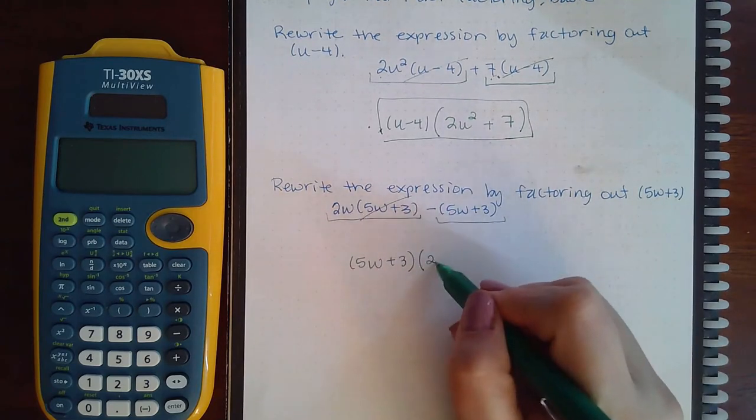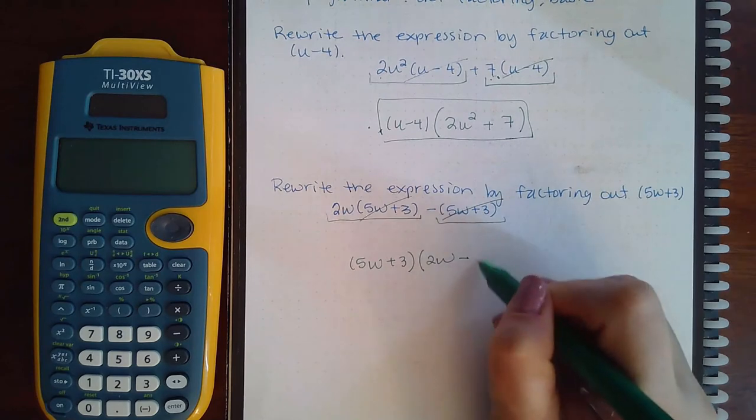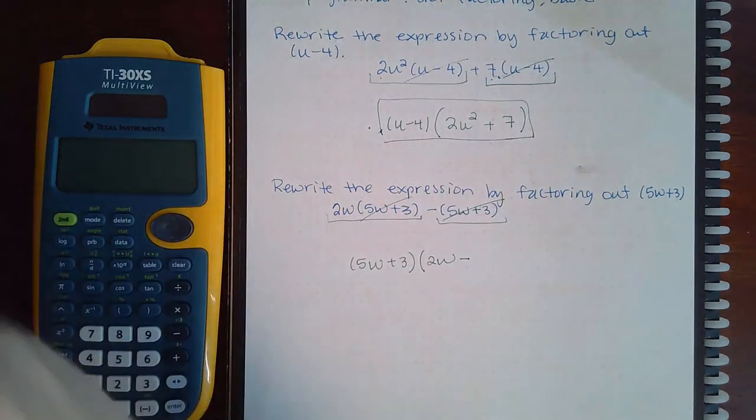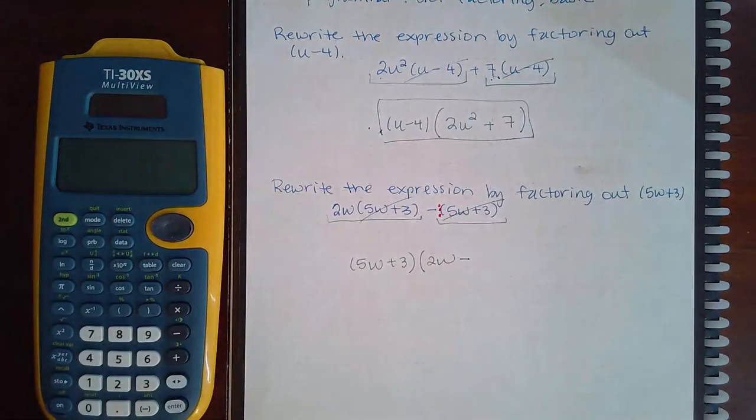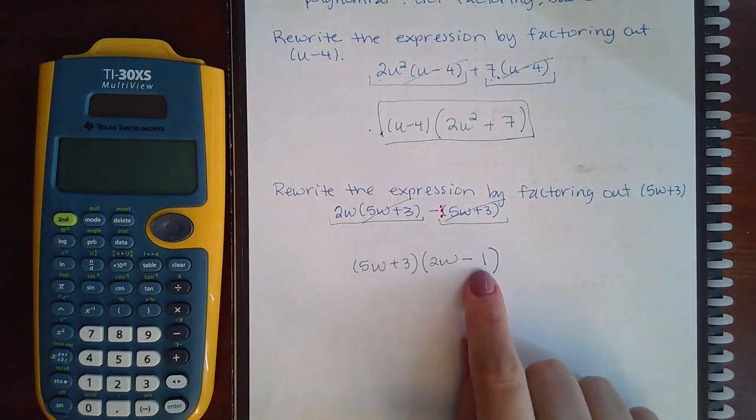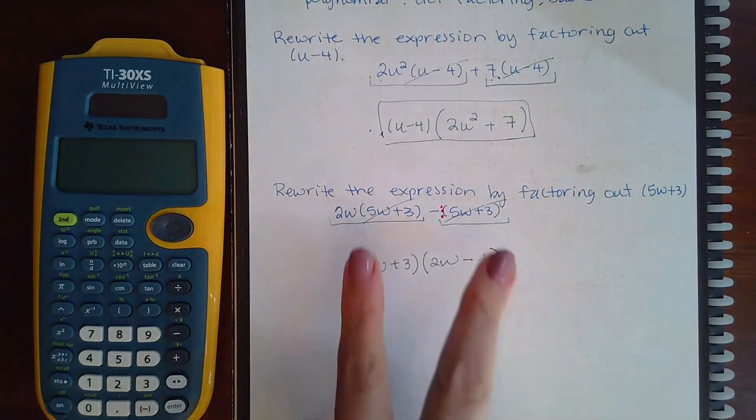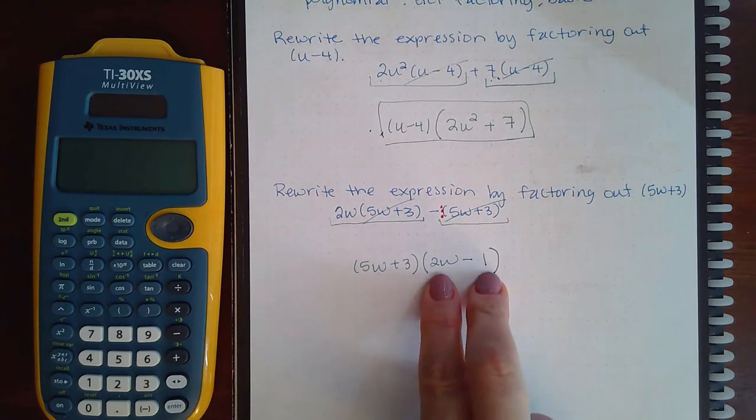I'm left with a 2w. And if this is gone, I'm still left with minus something. Remember that there is always a one coefficient in front there, and so I am left with the minus one.